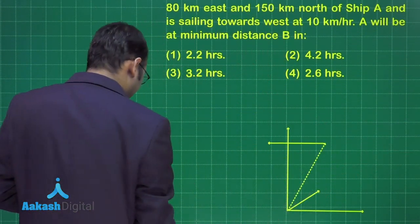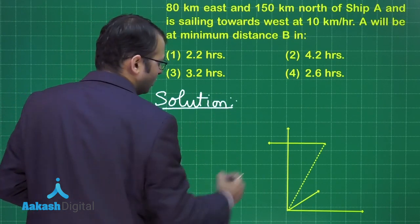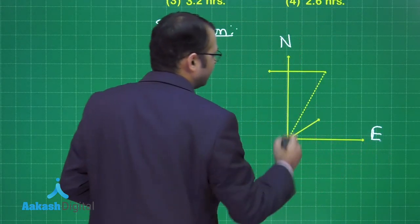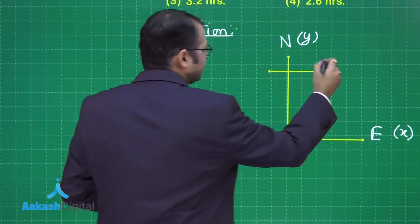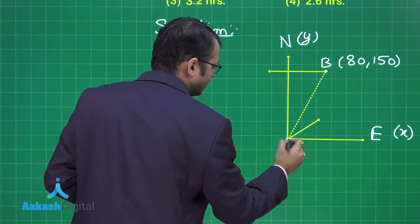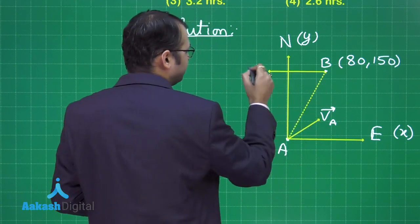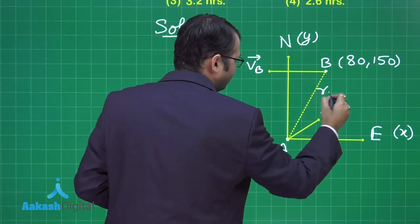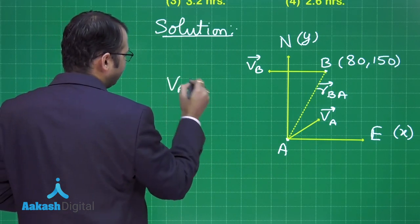A formula for minimum distance time is required. Looking at the diagram: north is the y-axis and east is the x-axis. Ship B's location is at coordinates (80, 150) and ship A is at the origin. Velocity of A is in the northeast direction, and velocity of B is towards the west.